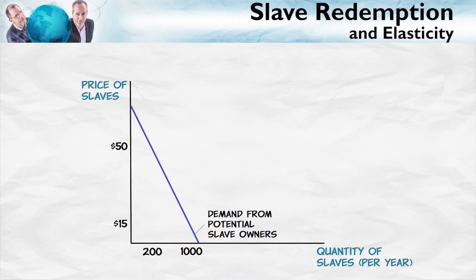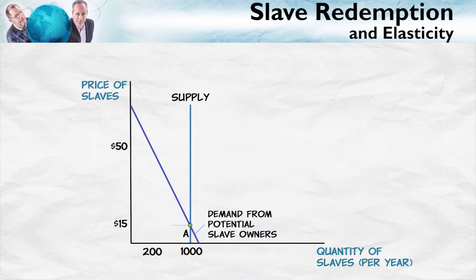So let's assume to start with that the supply of slaves is perfectly inelastic. That is, it doesn't respond at all — the quantity supplied of slaves does not respond to the price. Given these assumptions, the equilibrium is found at point A, with a price of slaves of $15 per slave.